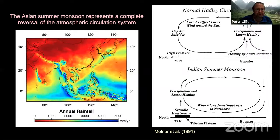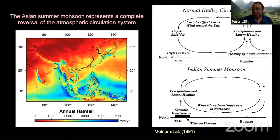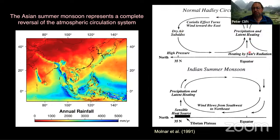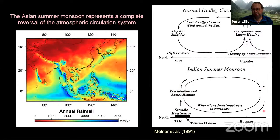We all know what the monsoon is — it's the seasonal climate in Asia, particularly featuring heavy rainfall in the Western Ghats and along the front of the Himalaya, as well as in Southeast Asia, southern China, and parts of East and Northeast Asia. The monsoon reflects a reversal of circulation patterns in Asia, where normally we have heating on the equator and dry air subsiding in the mid-latitudes.